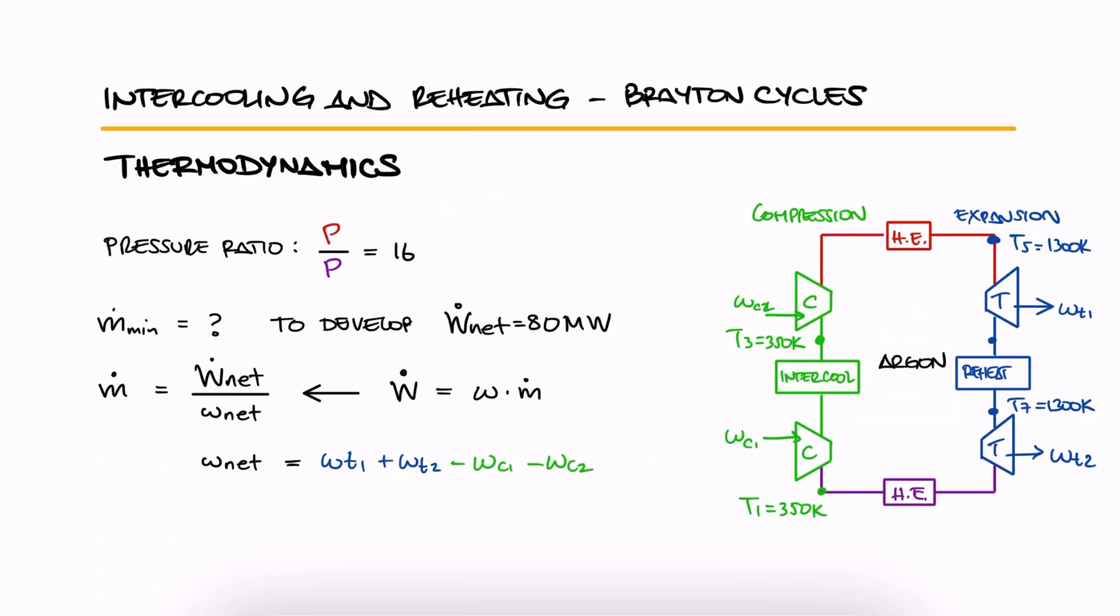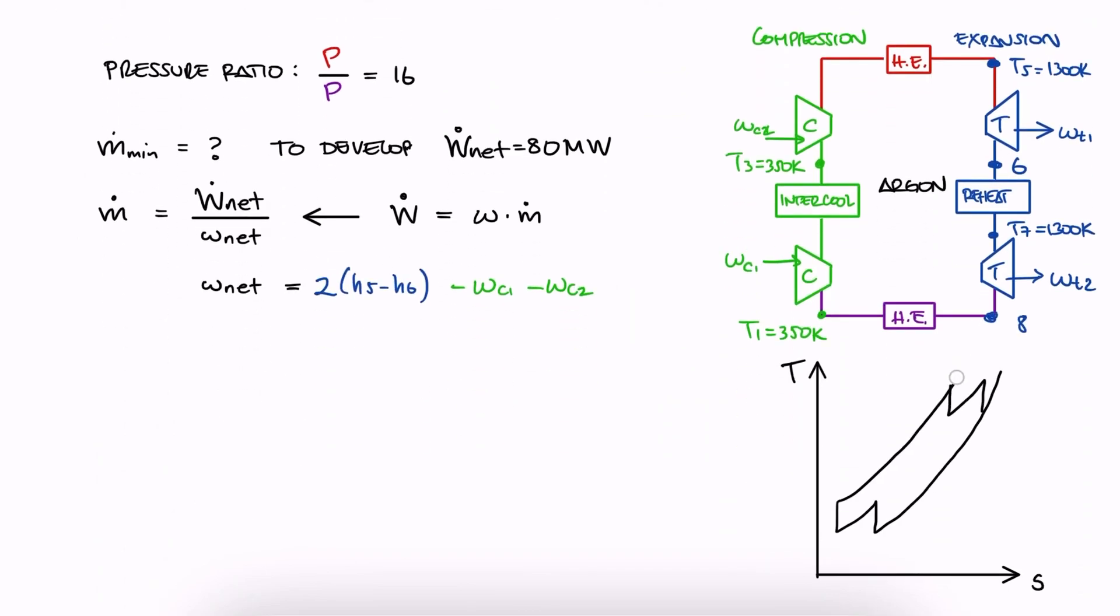Now if you haven't studied the previous example, please do so before continuing, because I'm going to use two concepts explained there. The first one is that the work of the two turbines can be simplified as two times the work of one, two times H5 minus H6. And the work of the two compressors can be simplified as two times the work of one, two times H2 minus H1.